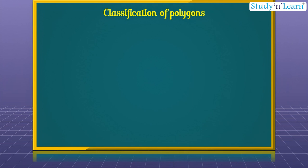Classification of Polygons. Polygons are classified by the number of their sides. There can be no polygon with one or two sides, so let us begin with three sides.